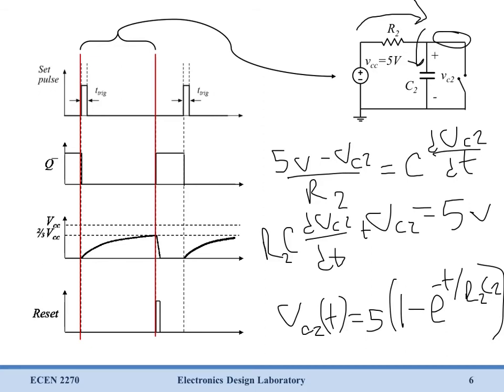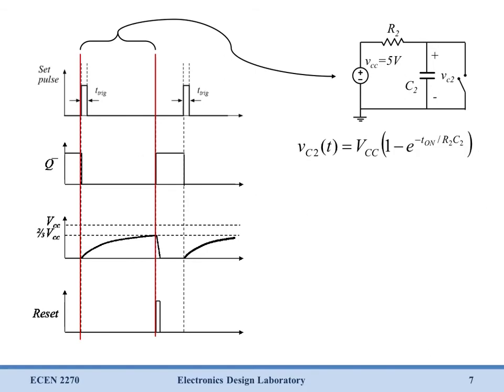But what we're really interested in is at what point in time does Vc2 equal two-thirds Vcc. So we want to know when this happens. Because as soon as it hits there, that's going to set our T on pulse length. So beginning from our solution in the last slide, we can solve this again. And now what we're really concerned with: two-thirds Vcc equals Vcc times 1 minus e to the minus t on, because at t on we get this, over R2C2.